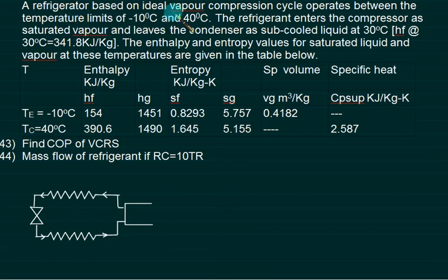A refrigerator based on ideal vapor compression cycle is working from minus 10 degrees to 40 degrees. We will assume there are no losses. The evaporator temperature is minus 10, condenser temperature is 40.